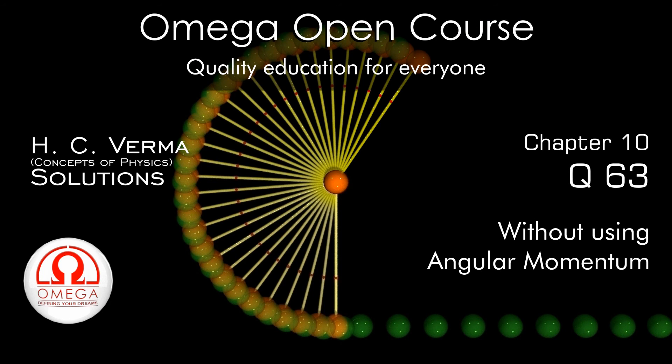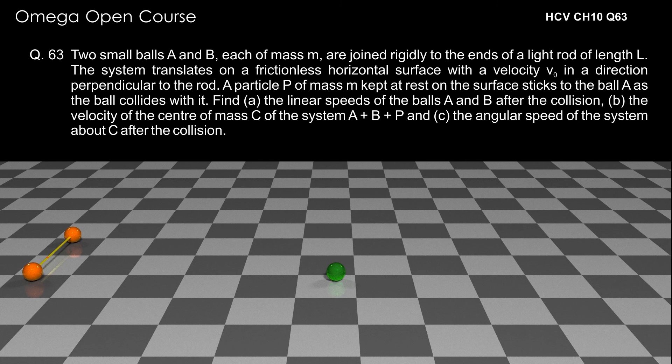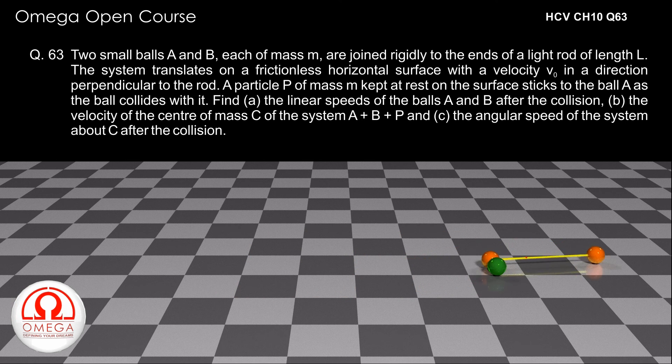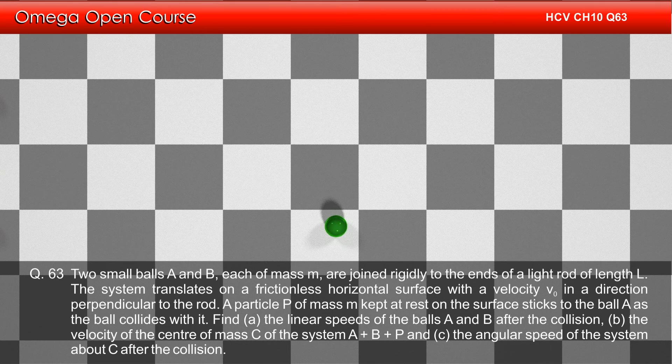Question 63: Two small balls, A and B, each of mass M are joined rigidly to the ends of a light rod of length L. The system translates on a frictionless horizontal surface with a velocity V0 in a direction perpendicular to the rod. A particle P of mass M kept at rest on the surface sticks to the ball A as the ball collides with it.